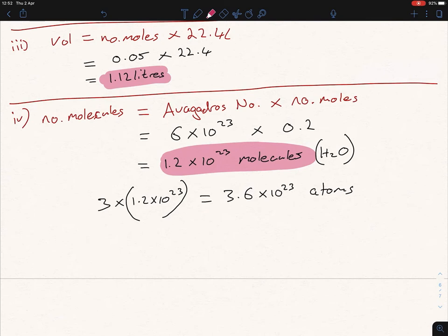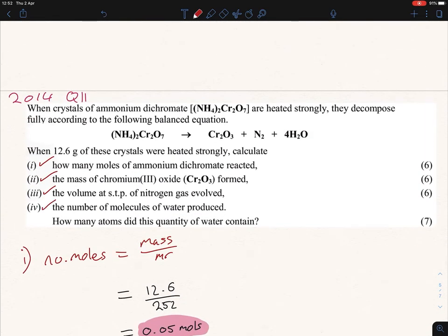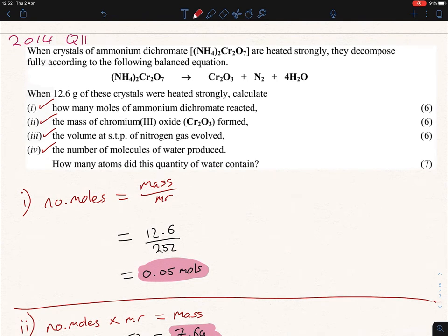We'll always have more atoms than we would molecules. Think about it. So 3.6 times 10 to the power of 23 atoms present, and the reason being was there was, if we're looking at it, there's three atoms for every molecule. So look, that's that question there answered. That's 2014 question 11. Look, I hope that helped guys, and we're going to come across something similar to this in the next question. So I'll talk to you then.